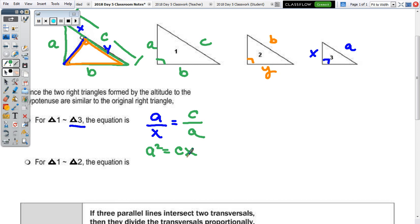With the cross product being A squared equals C times X. And then, in comparing one to two, we only have B to Y, or B and a Y. So, if I write B to Y, in comparing that to the first triangle, that's equal to C to B. So, we end up with B squared equals C times Y.